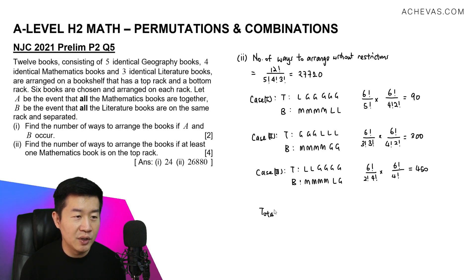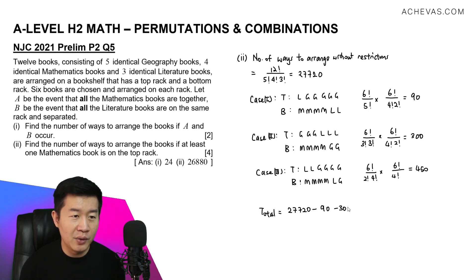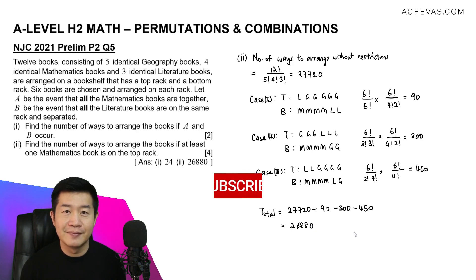The total number of ways for part two is found by taking the unrestricted total and subtracting all complement cases: 27,720 minus 90 minus 300 minus 450, which gives our final answer of 26,880.